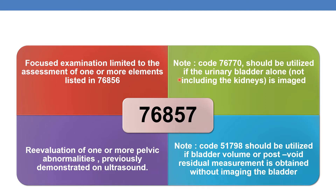There are two important notes under this code. First, code 76770 should be utilized if the urinary bladder alone — not including the kidneys — is imaged. If only the urinary bladder alone is imaged by ultrasound, assign 76770. Similarly, code 51798 should be utilized if bladder volume or post-void residual measurement is obtained without imaging the bladder.